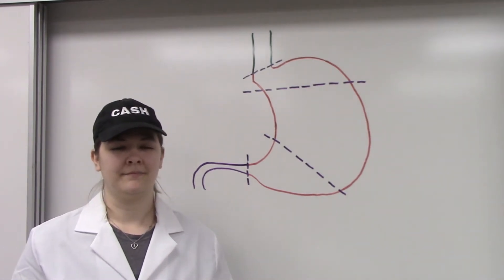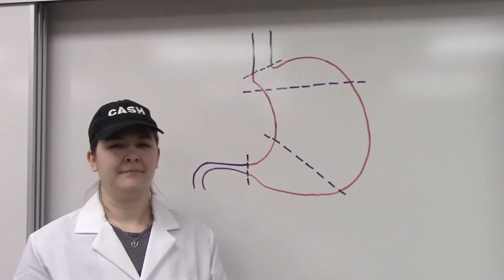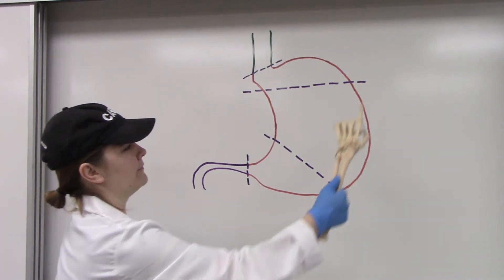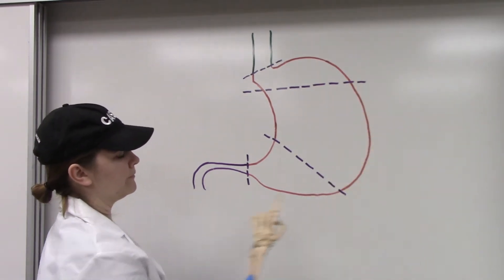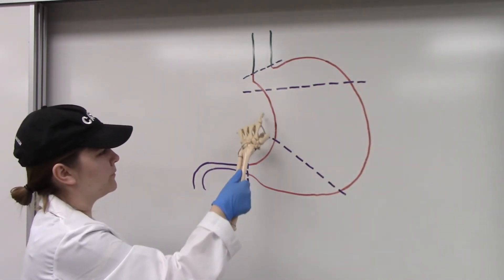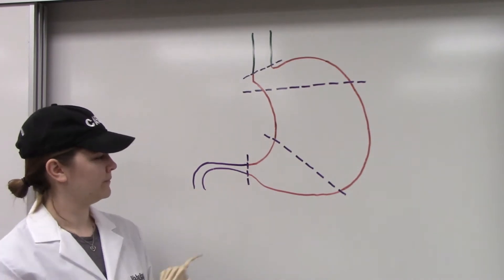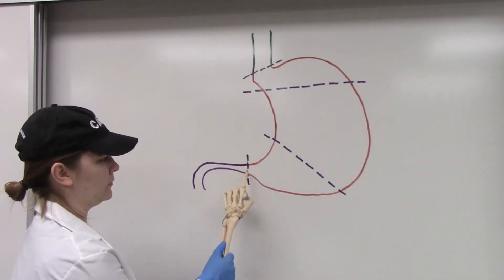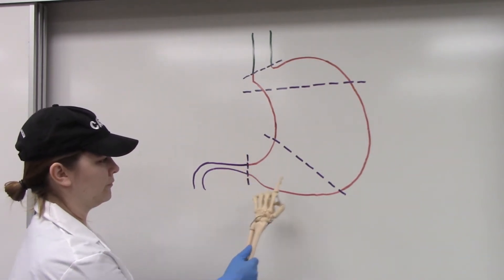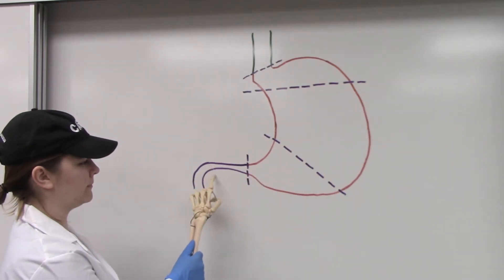In addition to these three parts of the stomach, there are three features you need to learn. These are the greater curvature of the stomach, the lesser curvature of the stomach, and finally the pyloric sphincter, which is a muscle that controls the passage of food from the pylorus of the stomach into the duodenum of the small intestine.